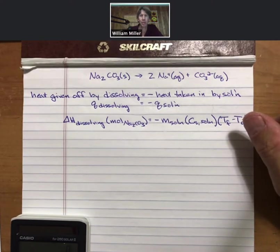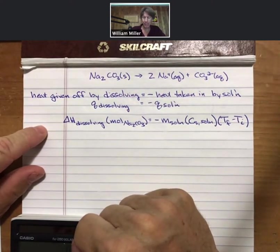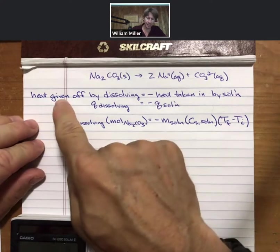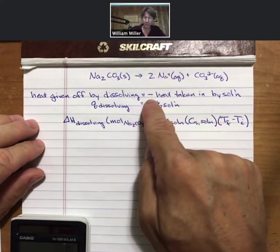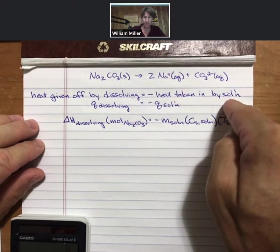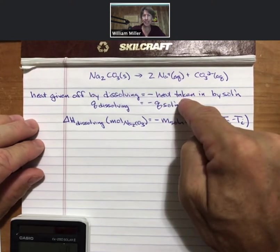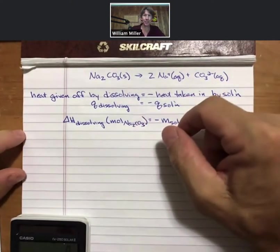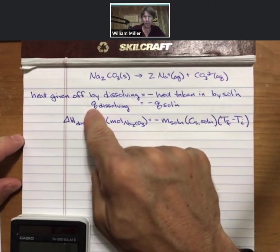Experiment six: calorimetry — calculate the heat of dissolving of sodium carbonate. I've got the dissolving reaction for sodium carbonate up top, and the equations for the calorimetry experiment: the heat given off by dissolving equals the negative of the heat taken in by the solution. The negative sign is there because one thing is giving off heat and the other is taking in heat, so there's a sign difference accounted for by the minus sign.